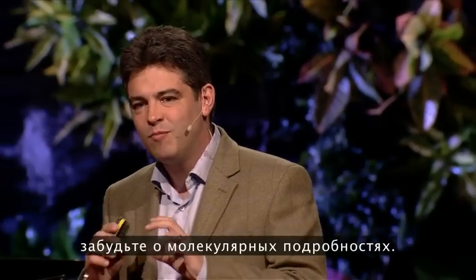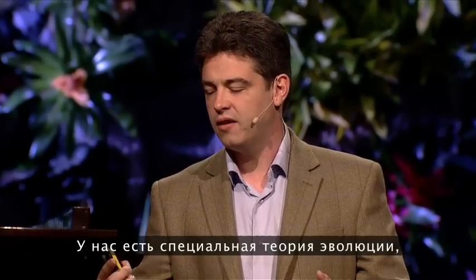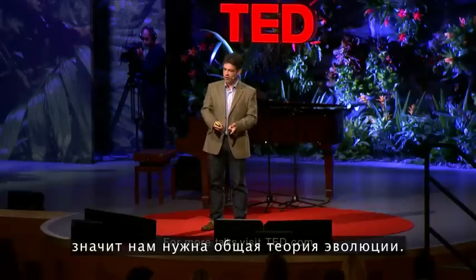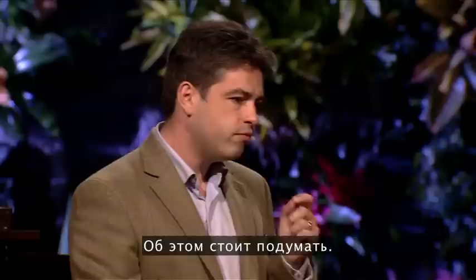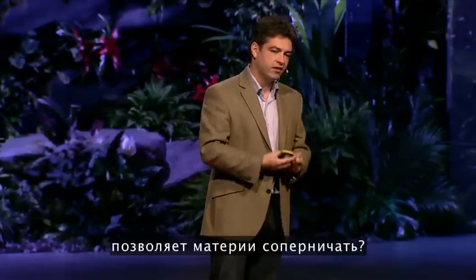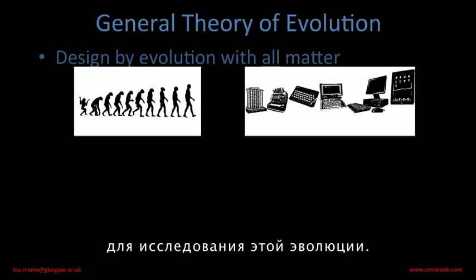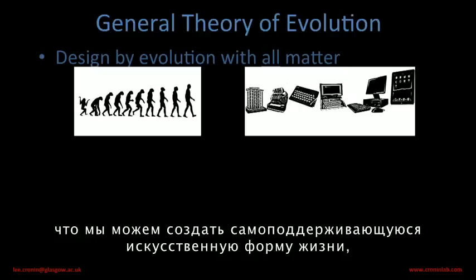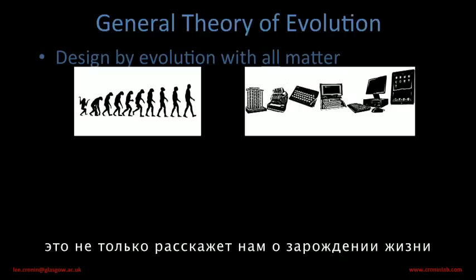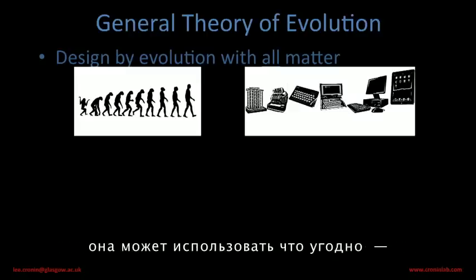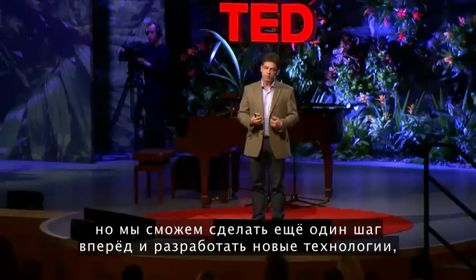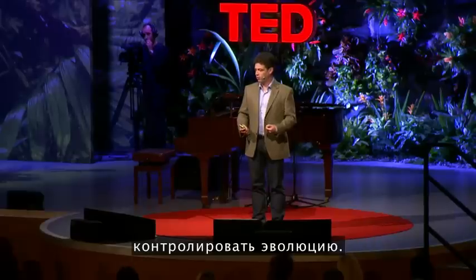If we can somehow encourage these molecules to talk to each other, make the right shapes, and compete, they will start to form cells that will replicate and compete. If we manage to do that, let's zoom out on what that could mean. We have this special theory of evolution that applies only to organic biology, to us. If we could get evolution into the material world, then I propose we should have a general theory of evolution. Does evolution control the sophistication of matter in the universe? Is there some driving force through evolution that allows matter to compete?